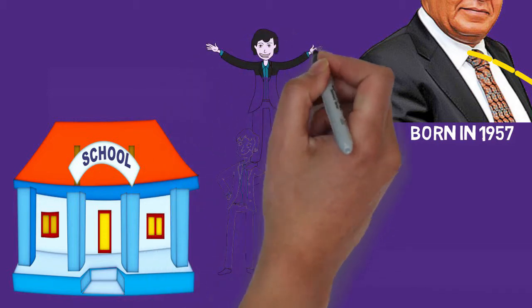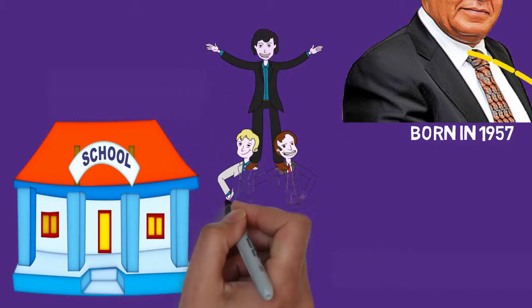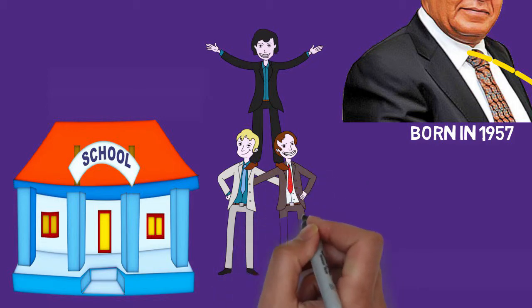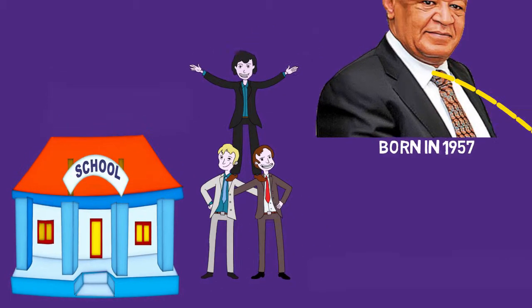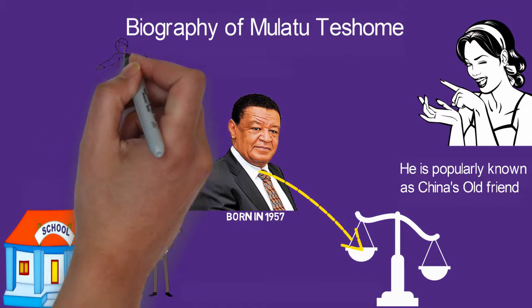Upon his return, the Ethiopian government knew they needed him, and without any debate, he was made Deputy Minister of Economic Development and Cooperation with Gama Biru being the senior minister.